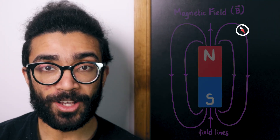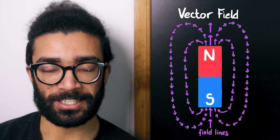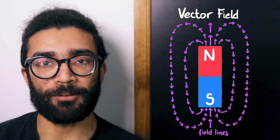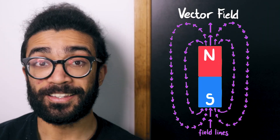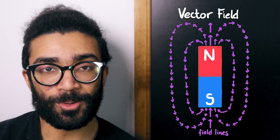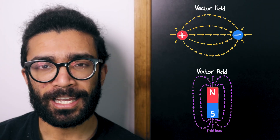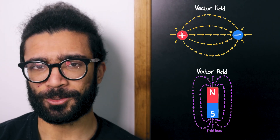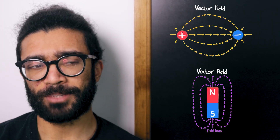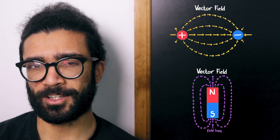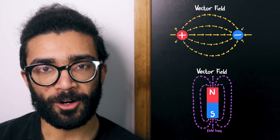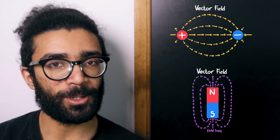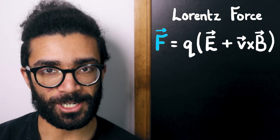Magnetic fields are also a type of vector field, in that we can assign a vector to every point in this region of space. This is similar to what we saw for electric fields earlier, except the things generating electric and magnetic fields are different, at least on the surface. With that brief overview of both the electric and magnetic vector fields, let's return to our Lorentz force equation.